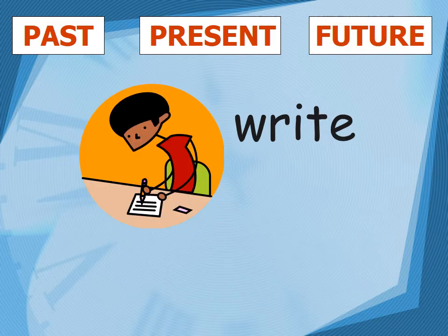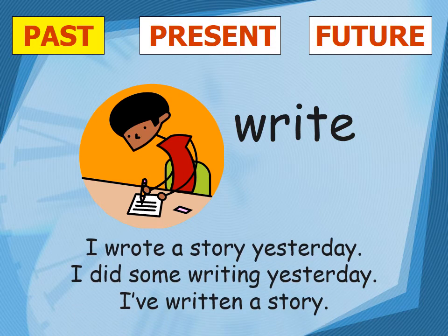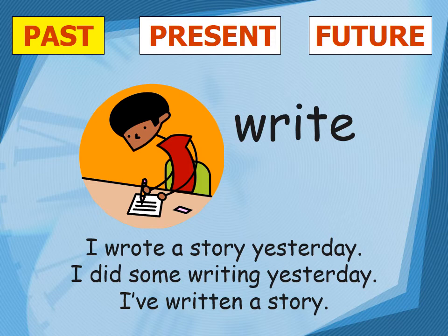How do we use 'write' as a verb form? How do we put it in past, present, and future? For past tense: 'Yesterday I wrote a story' — 'wrote' is the past tense form. Also: 'I did some writing yesterday' and 'I have written a story yesterday.' These are three examples of 'write' depicting past tense.